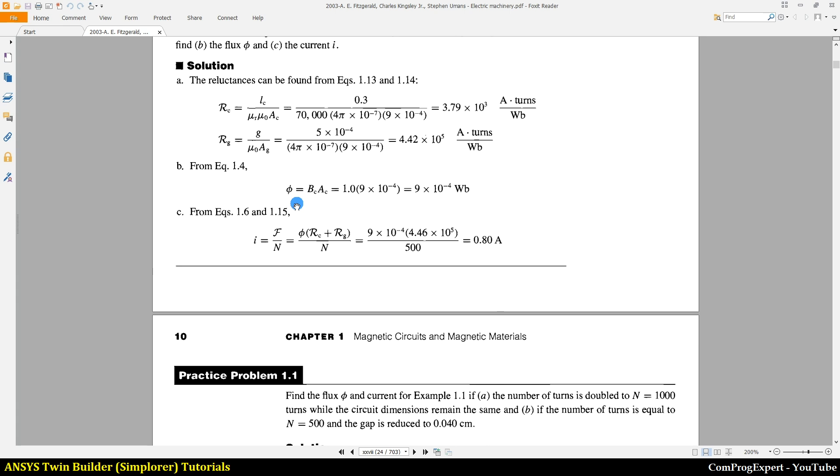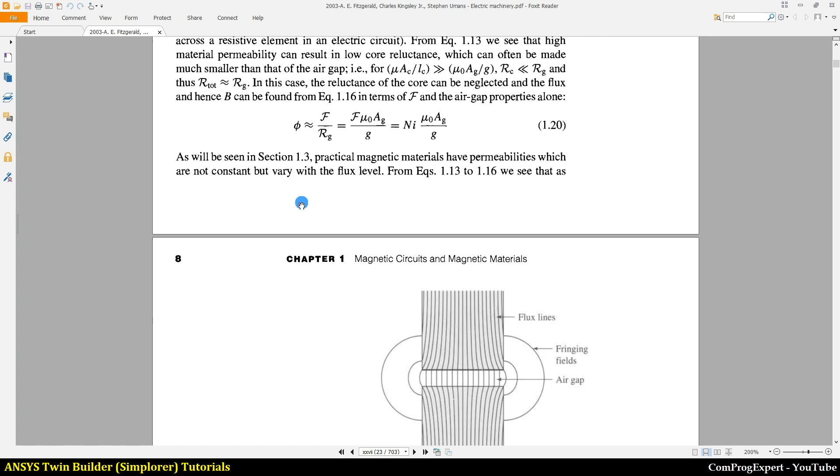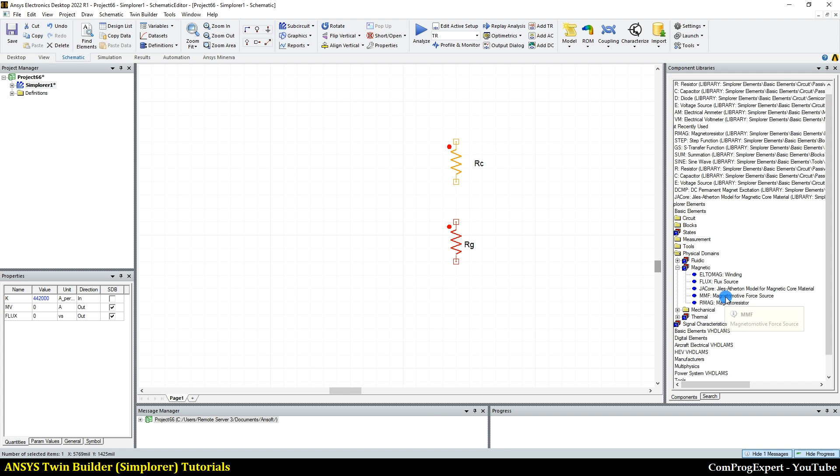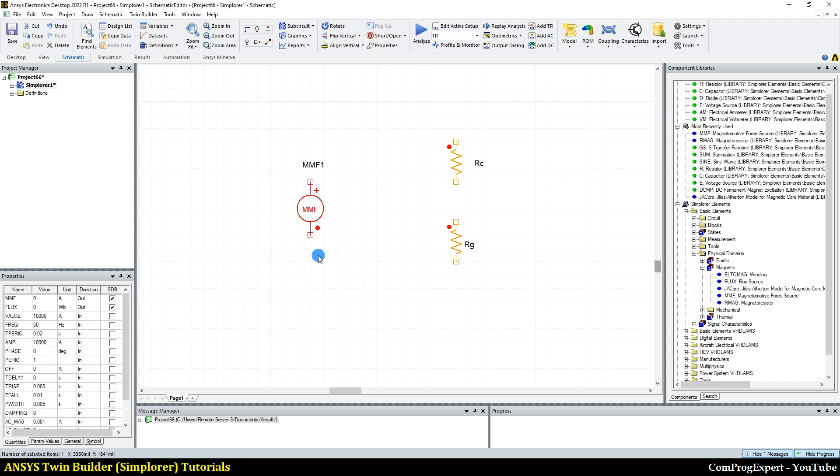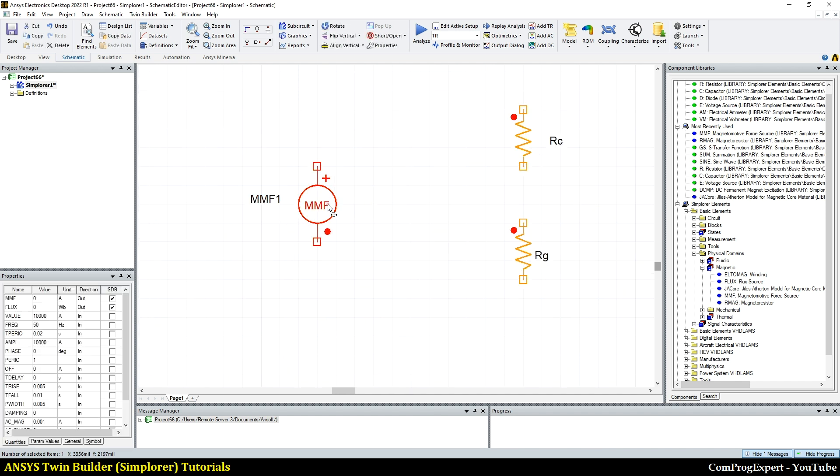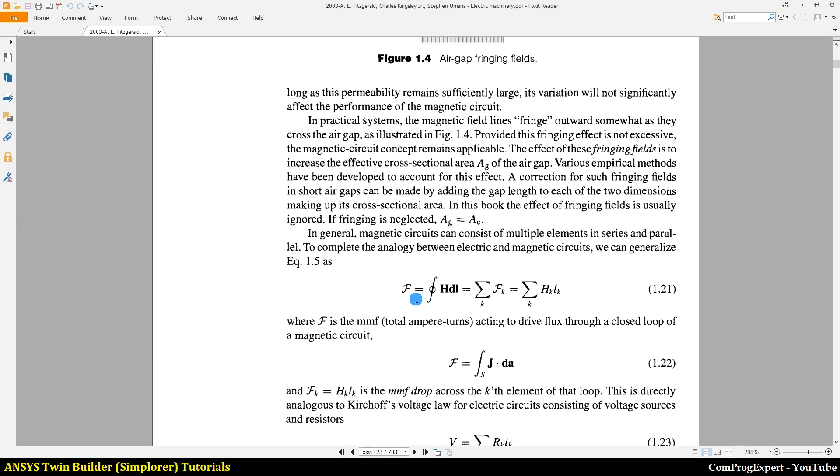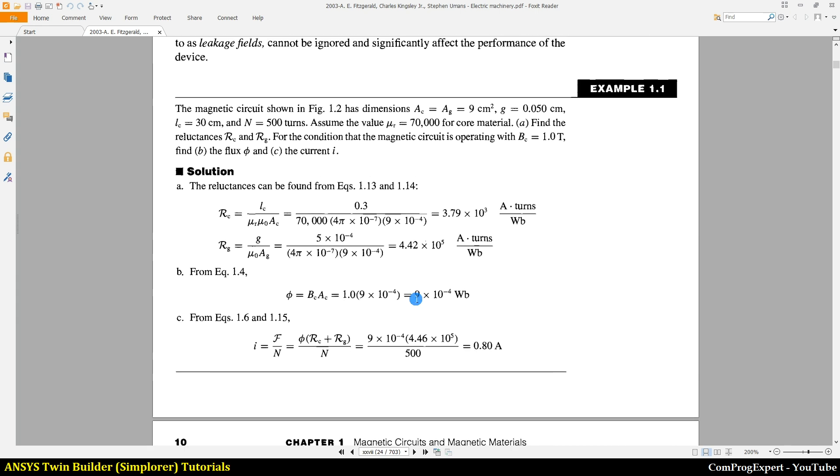So let's look at the parameters of this element, MMF one. This is the value that we have here, the unit is ampere. So this is the ampere turn, actually, the total magnetomotive force. What is the value of the total magnetomotive force here?